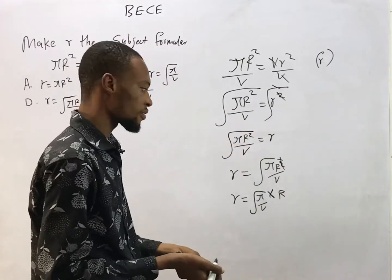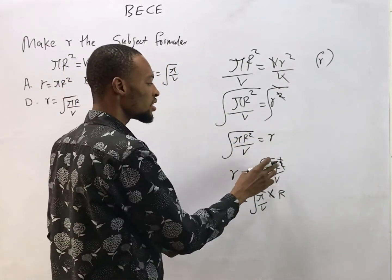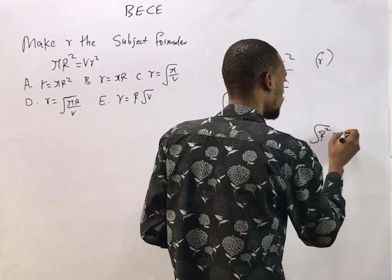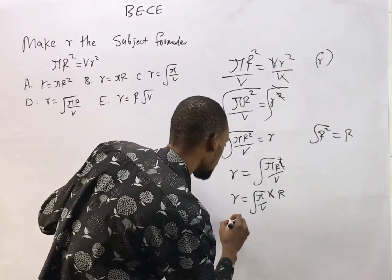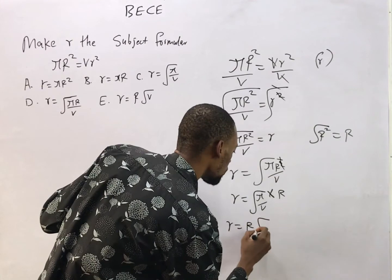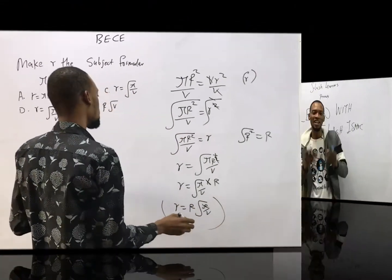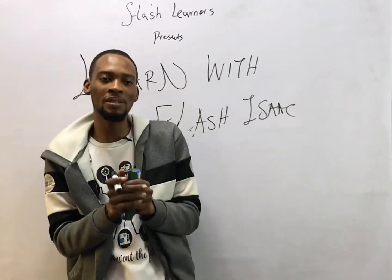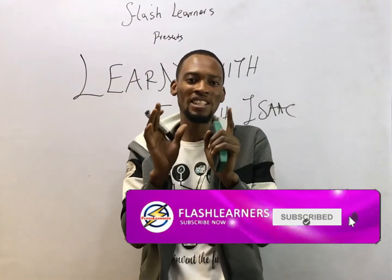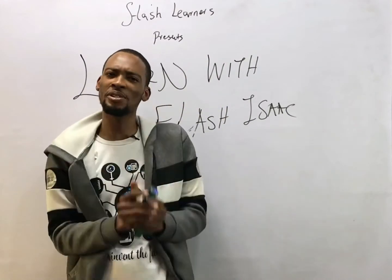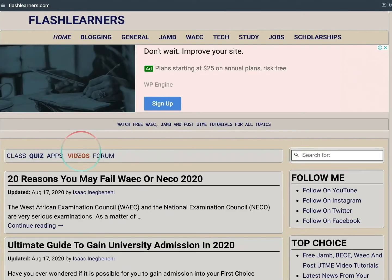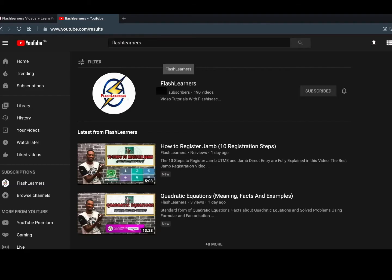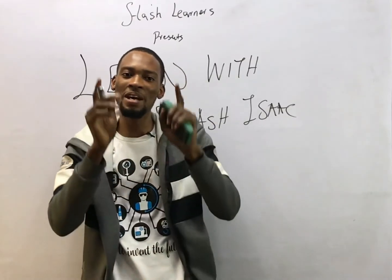So this becomes: small r equals R times square root of π over V, because the square on r has removed the square root from itself. In other words, square root of r² equals r. So small r equals R times square root of π over V. That is your answer. Thank you for watching — I am Flash Isaac. Feel free to subscribe to this channel, Flash Learners, and check out my other videos.